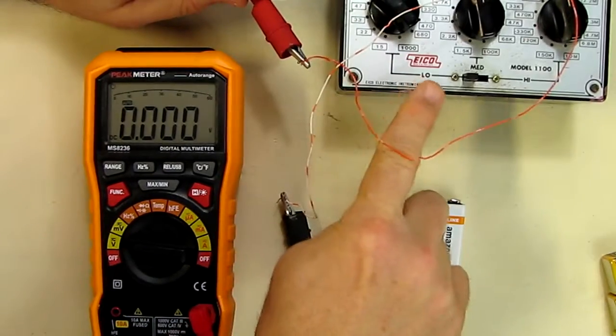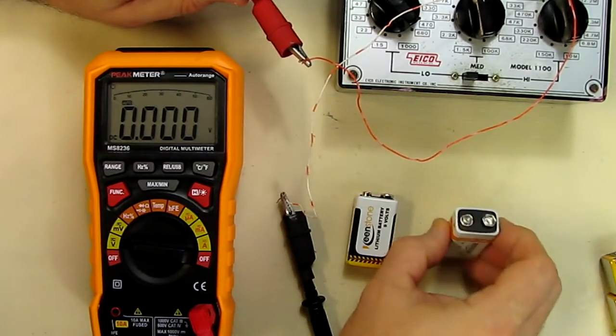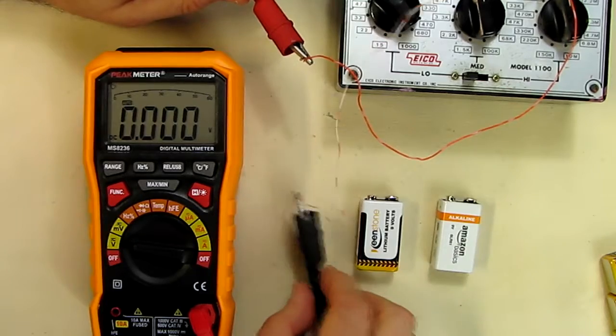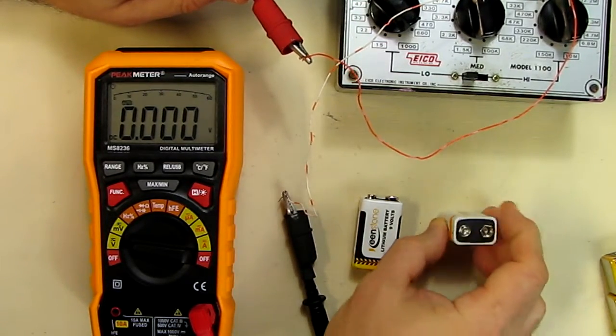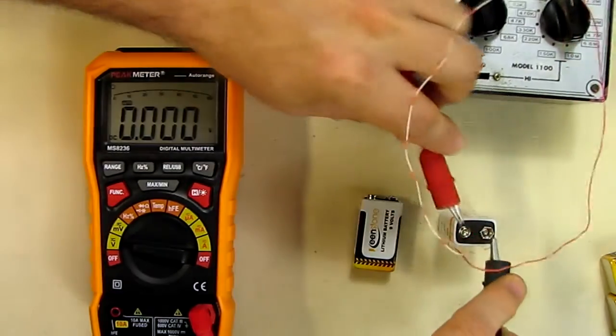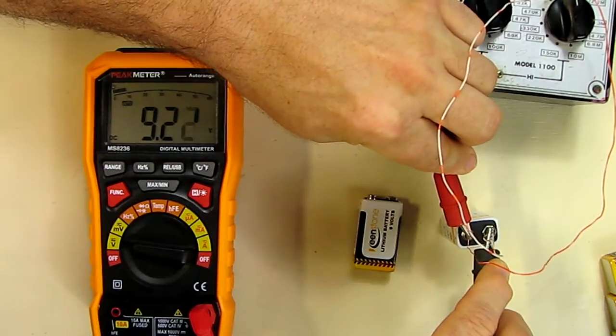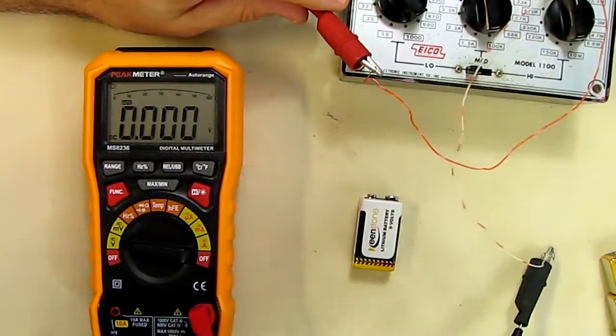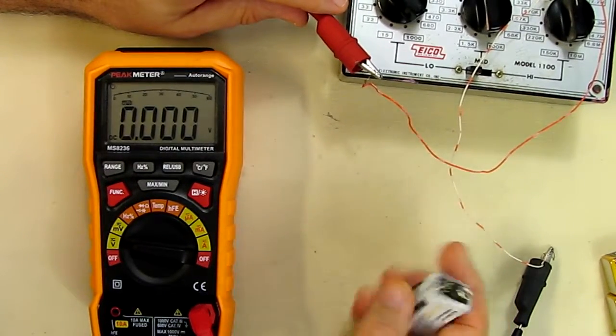Now we're going to do a basic load test of the battery. We're going to put a 68 ohm resistor which is 150 milliamp hours load on the batteries, which is pretty typical of what a lot of devices will draw from these batteries. So first we're going to try the Amazon: we get 9.22 at 150 milliamp hours.